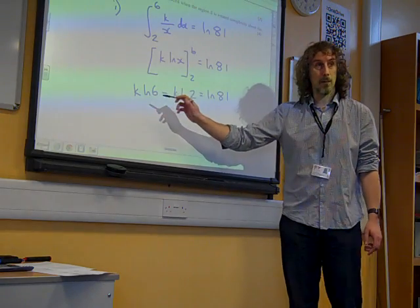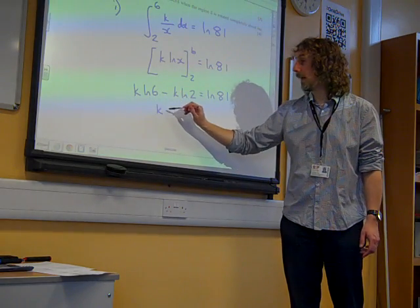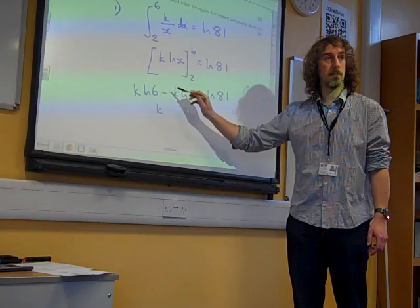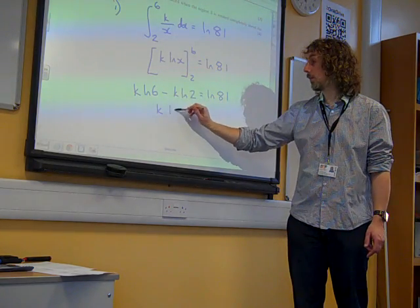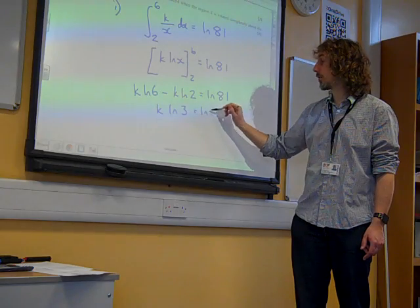If we put in our limits, we've got k times natural log of 6 minus k times the natural log of 2 is the natural log of 81. And we've got a common factor of k and we're subtracting. So this is k lots of ln6 minus ln2 is ln3, isn't it? We're happy with that. It is natural log of 81.